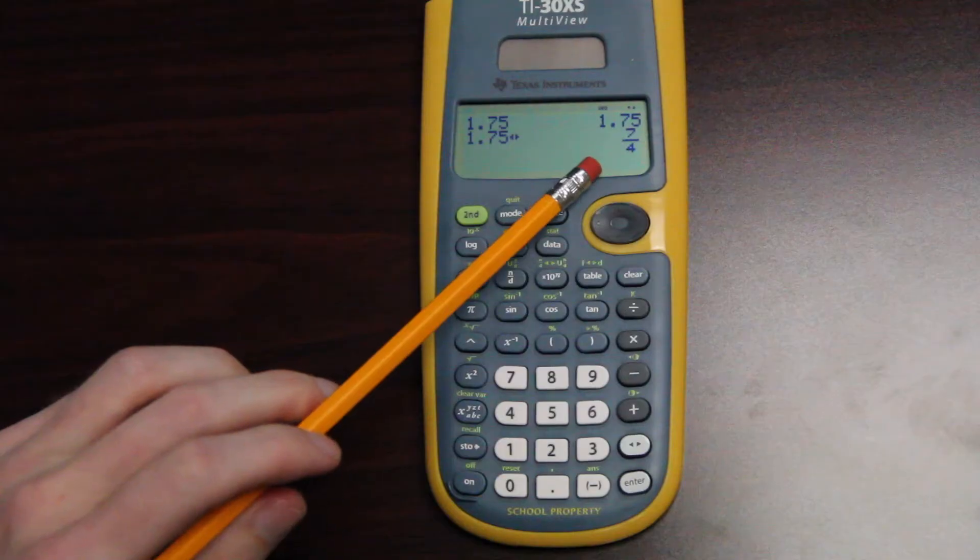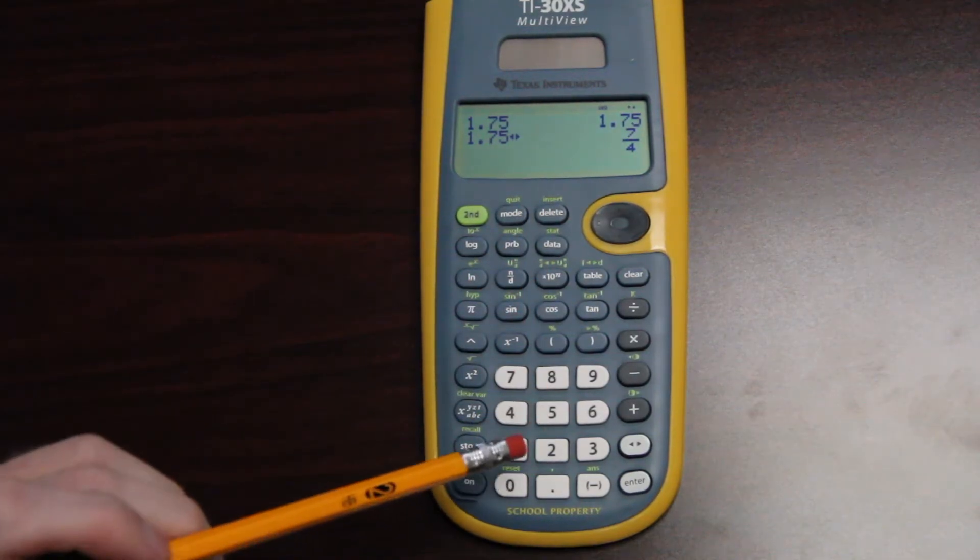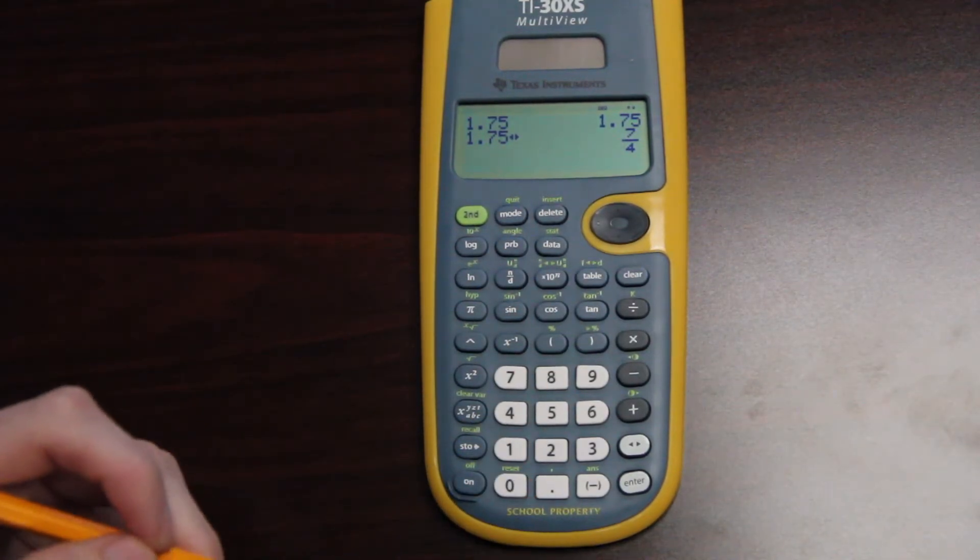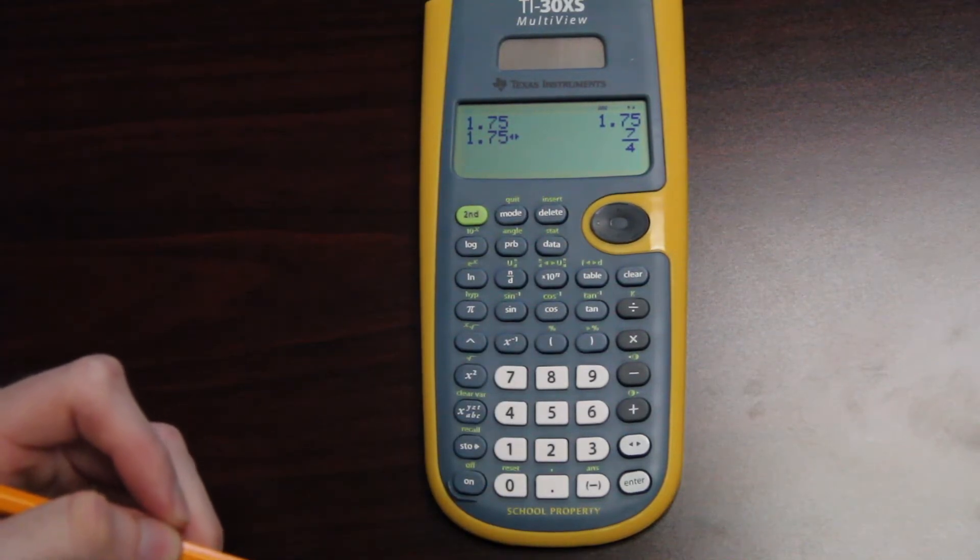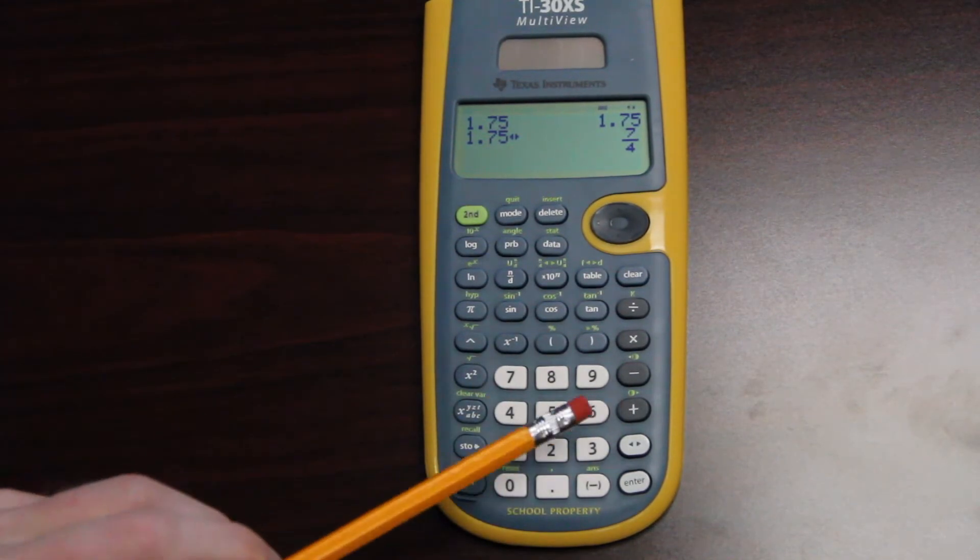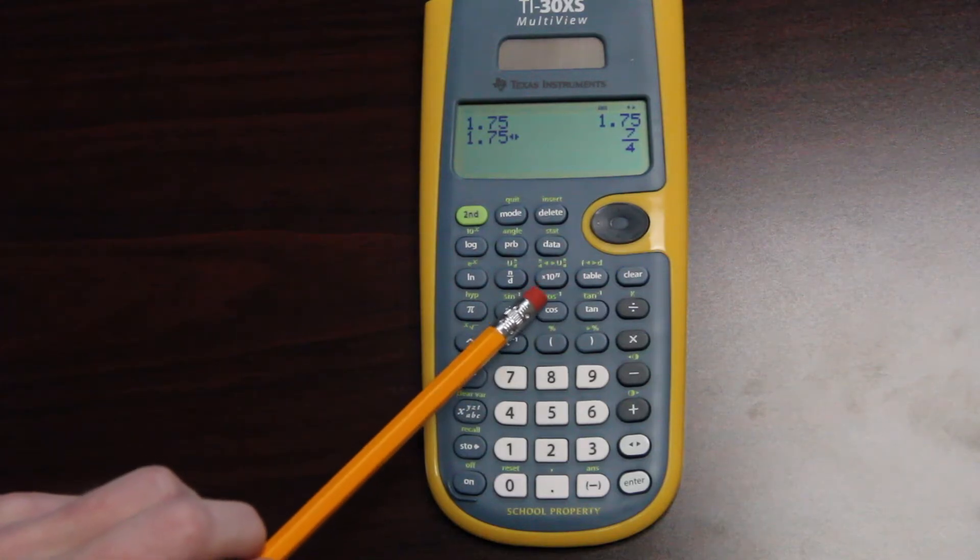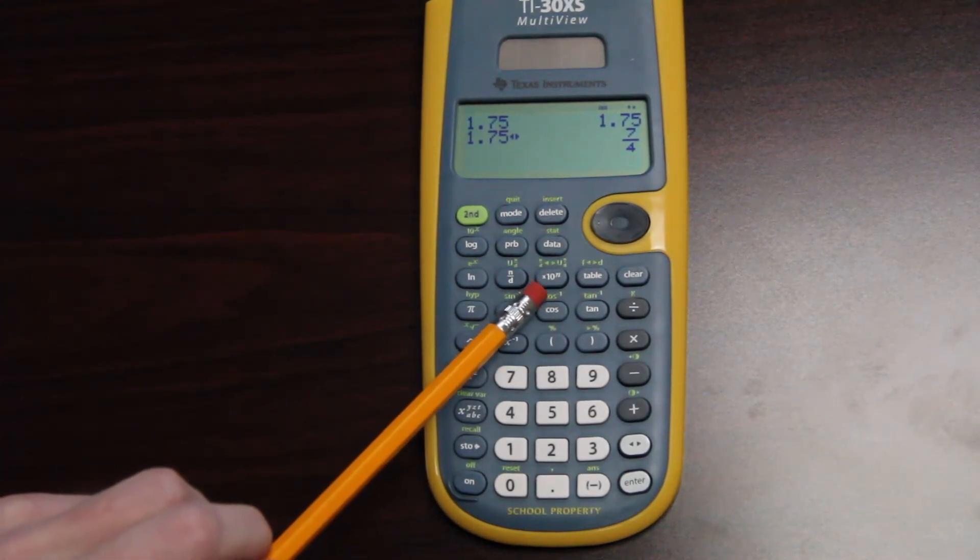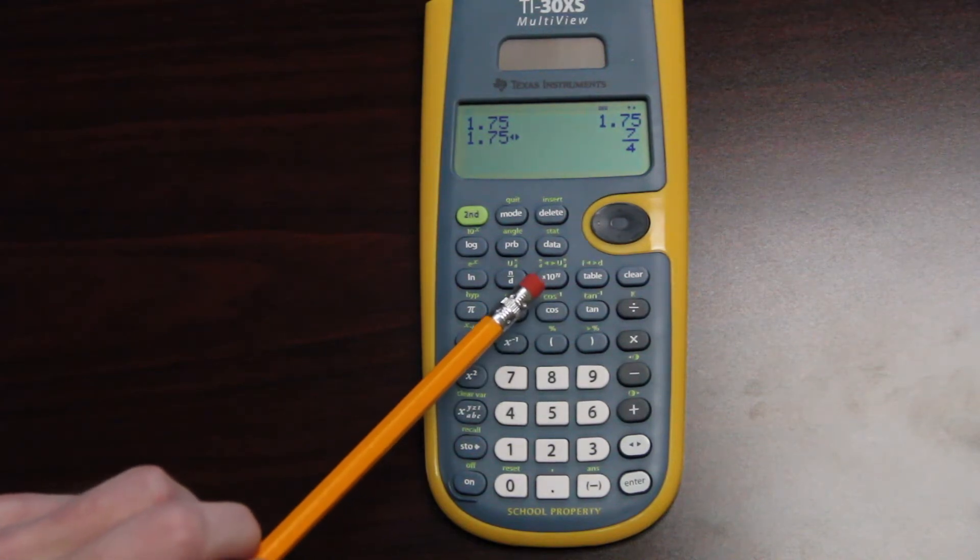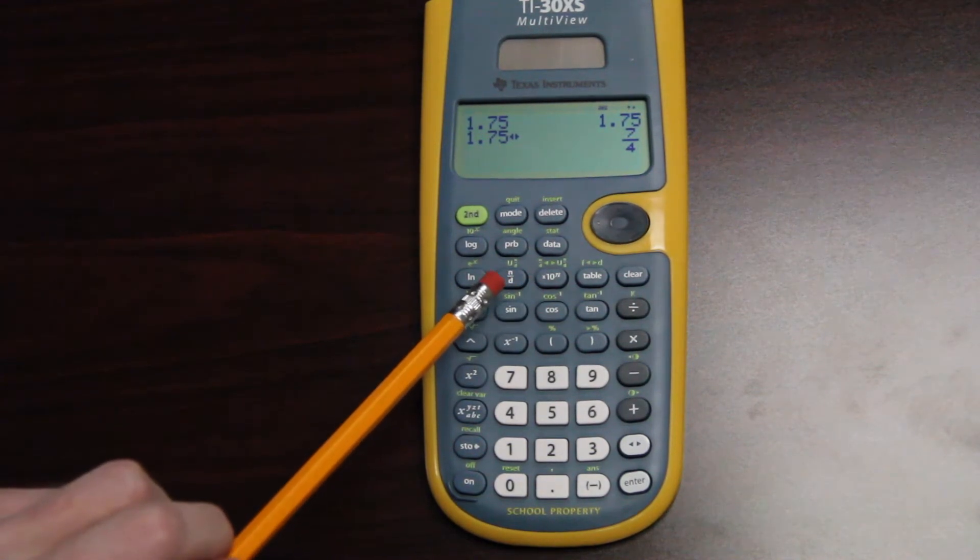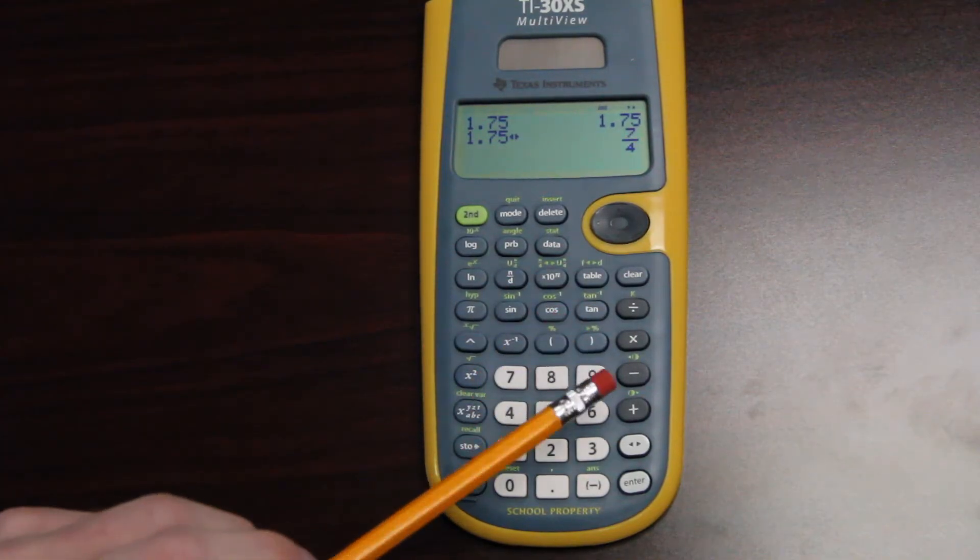If you notice though, the numerator is bigger than the denominator. What that means is it's an improper fraction. Well, on this calculator, there's a way to change improper fractions to mixed numbers. If you look above this times 10 to the n, in green, there's little buttons that say n over d and then u n over d. What that means is it takes an improper fraction and turns it into a mixed number and vice versa.